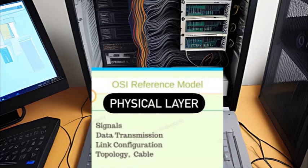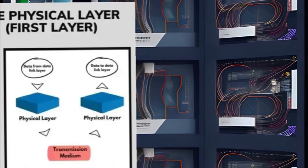At layer one, the smallest unit of transmittable digital information is the bit, represented as either zero or one. Bits are synchronized and transmitted according to supported data rates and modes such as simplex or duplex. Troubleshooting problems at layer one generally involves checking for issues like damaged cables, malfunctioning hardware, or unplugged connections — problems that can affect the functionality of higher layers. Layer one serves as the foundation of network communication, defining the physical infrastructure necessary for data transmission.